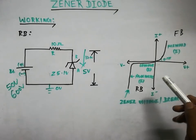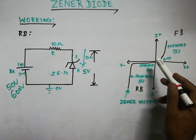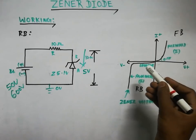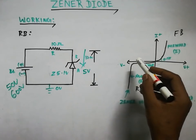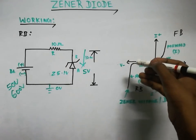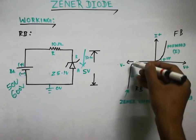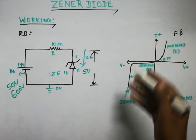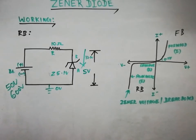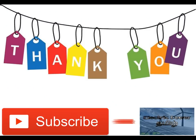Now let's look at the reverse bias VI curve. As the initial reverse voltage increases, only a small leakage current flows. The Zener voltage remains constant as voltage increases. Once the breakdown voltage is reached, the current rises sharply while the voltage stays constant — that is the Zener or breakdown voltage. This is the full detail of the Zener diode.